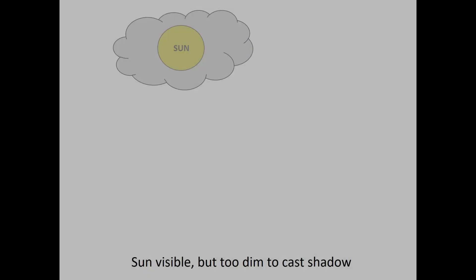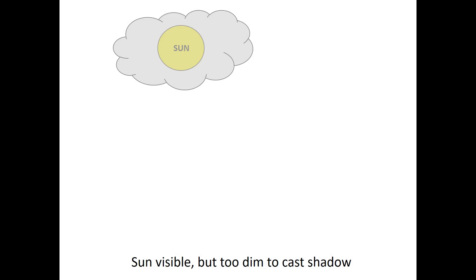If the sun is too dim to cast a shadow but it's still visible, there is a way, still, to establish directions, and I call it the gun sight method. Instead of using the sun's shadow to mark its location or its movement, you use a stick like the front sight of a gun aimed at the sun. It's easiest maybe to explain with another animated representation.